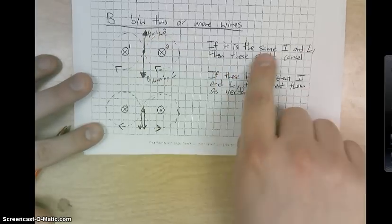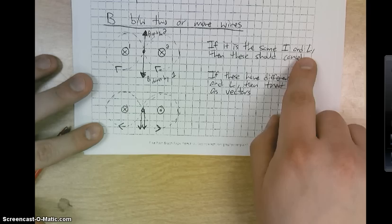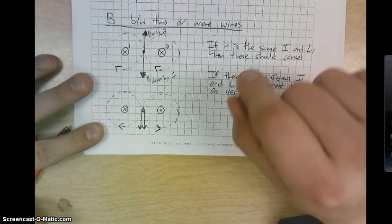Now, as long as they are the same current and the same length of wire, then those should just cancel out, and we should end up with nothing there.